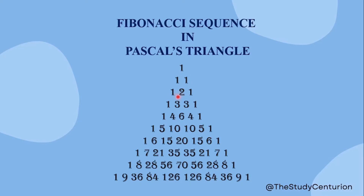Continuing Pascal's Triangle: 1 plus 2 is 3, and 2 plus 1 is 3. So the next row is 1, 3, 3, 1. Then the row after is 1, 5, 10, 10, 5, 1. Then: 1 plus 5 is 6, 5 plus 10 is 15, 10 plus 10 is 20, 10 plus 5 is 15, 5 plus 1 is 6, and we have 1 at each end. So this is Pascal's Triangle.